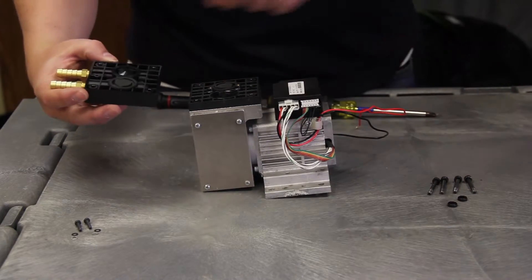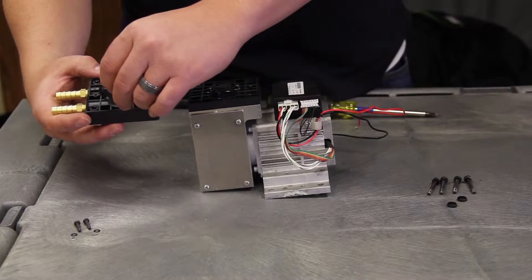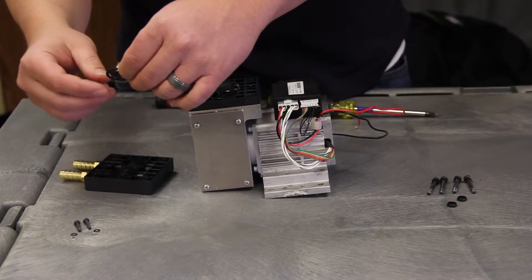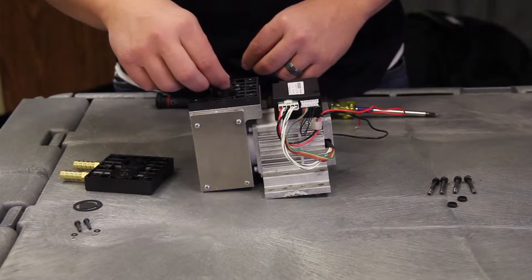Remove the top plate exposing the reed valves. Remove all the reed valves from the compressor top plate.